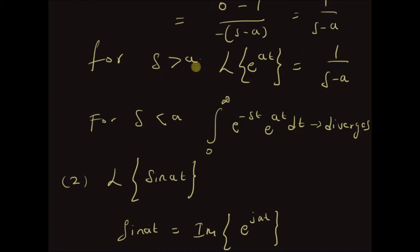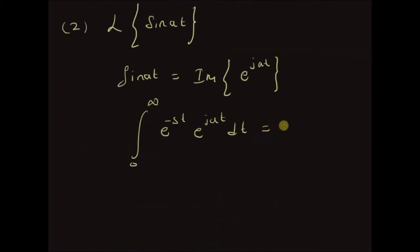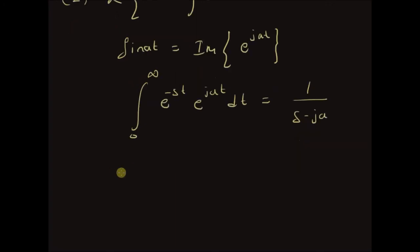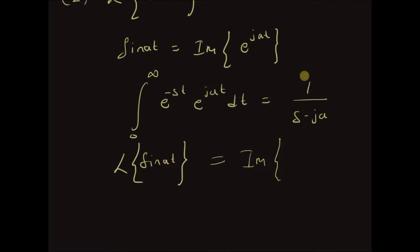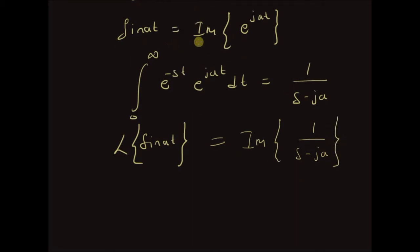Using the formula that the Laplace transform of the exponential e to the power at equals 1 over s minus a, this integral equals 1 over s minus ja. Therefore, the Laplace transform of sine of at is equal to the imaginary component of 1 over s minus ja.